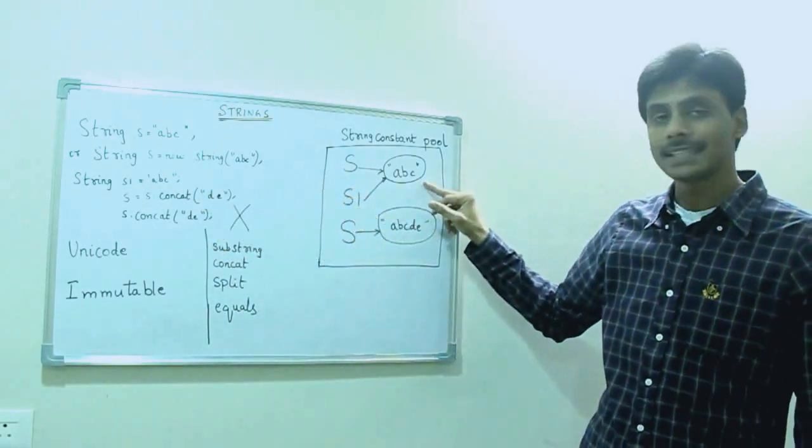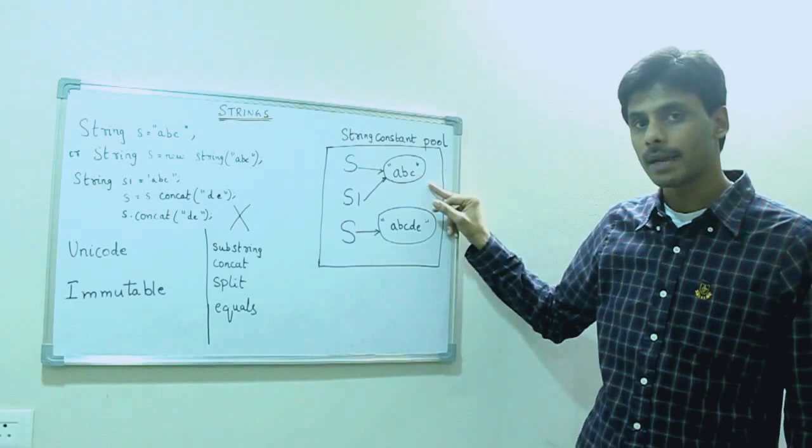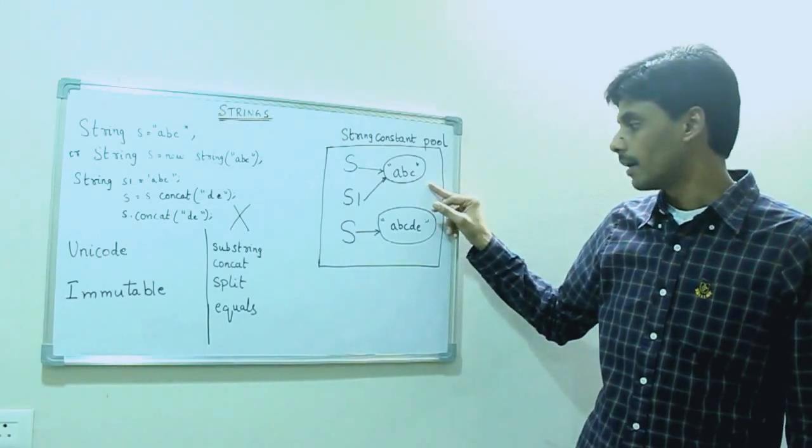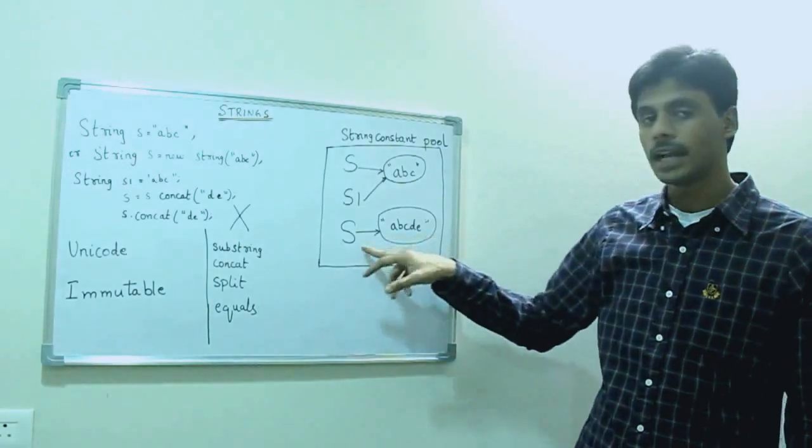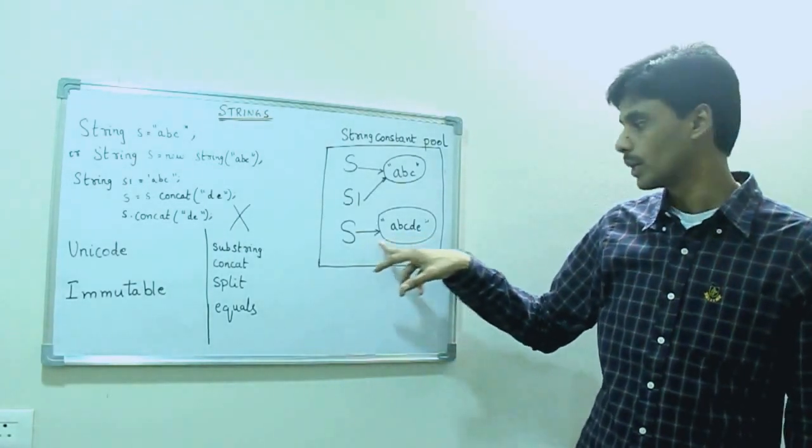JVM retains the old value ABC in memory, but it also creates a new value ABCDE and points S to the new value.